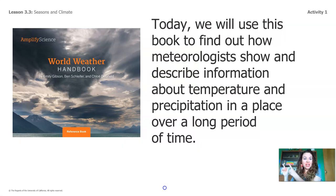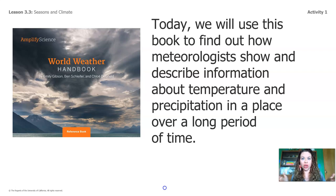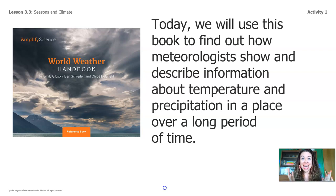Today, we're going to use this book to find out how meteorologists show and describe information about temperature and precipitation in a place over a long period of time. Quick pop quiz: do you remember the word that means information about temperature and precipitation in a place over a long period of time? It starts with the letter C. The word is climate. The climate of a place is the weather over a long period of time.